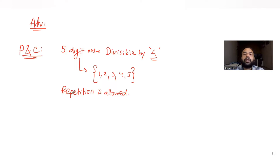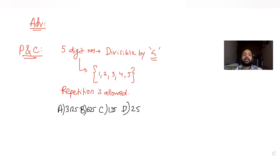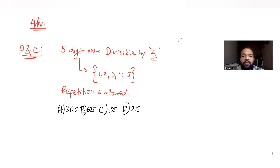So repetition is allowed. Let's find out how many 5-digit numbers we can form. There are 4 options given to us: option A is 3125, option B is 625, option C is 125, and option D is 20.